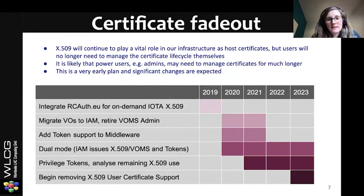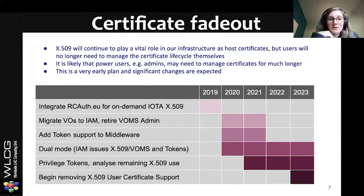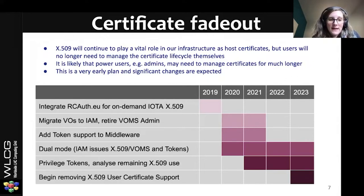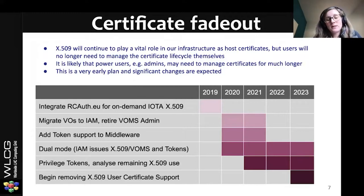Over the coming years, we're hoping to begin the fade-out of certificates. But importantly, we recognize that X.509 will continue to play a vital role in our infrastructure, both as host certificates and for admin users who may want or need to keep their certificate for edge cases not yet enabled for tokens. This is a very early plan and significant changes are expected. We've integrated RCAuth, an on-demand certificate authority, for backwards compatibility. We're currently setting up the new IAM system and migrating virtual experiments to it, with many people adding token support to middleware components. We expect to run in dual mode for the next few years before ultimately removing X.509 user certificate support.